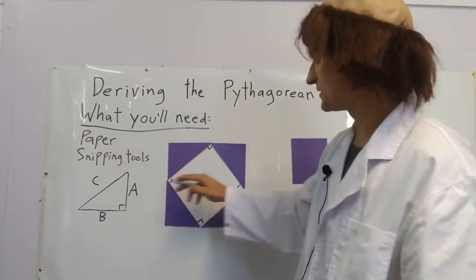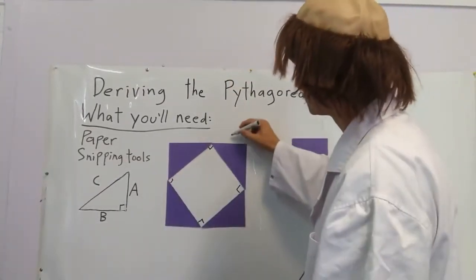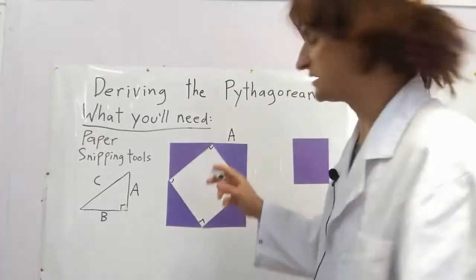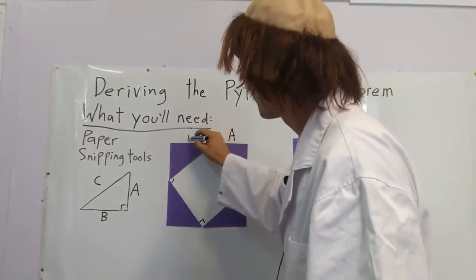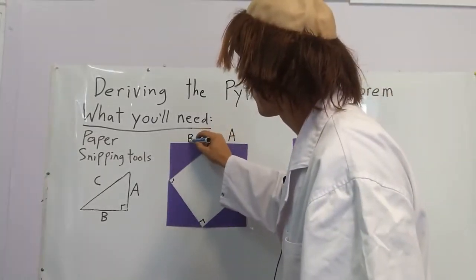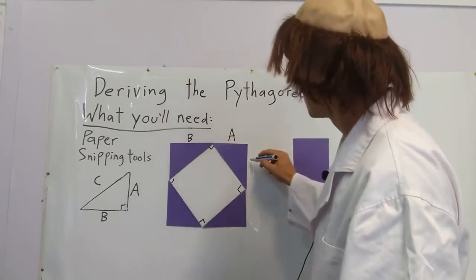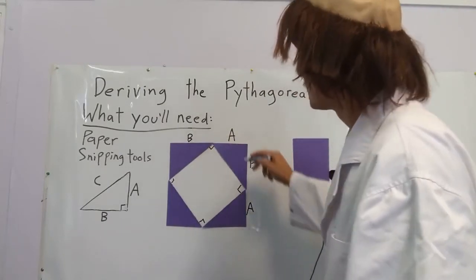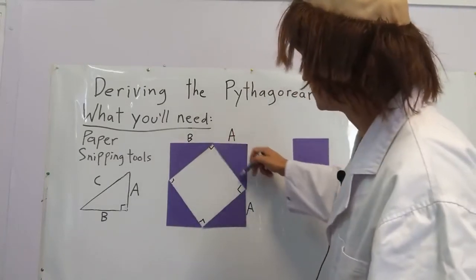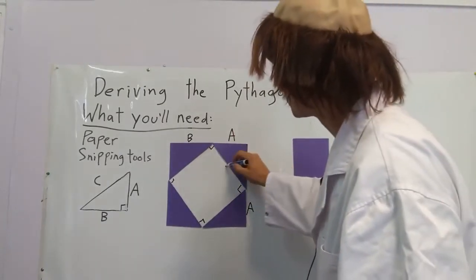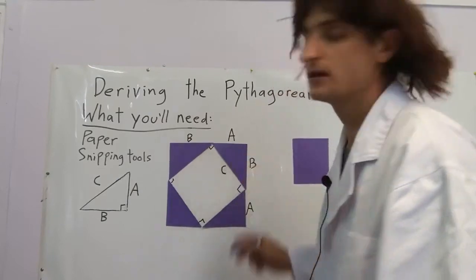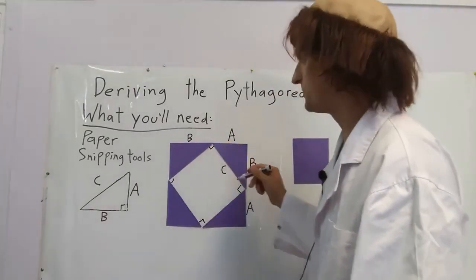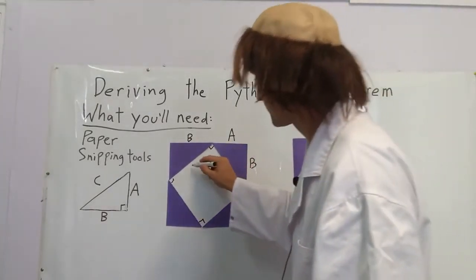These lengths here — the short side we'll call A, the long side B. This long one is called C. Another term for this is the hypotenuse.